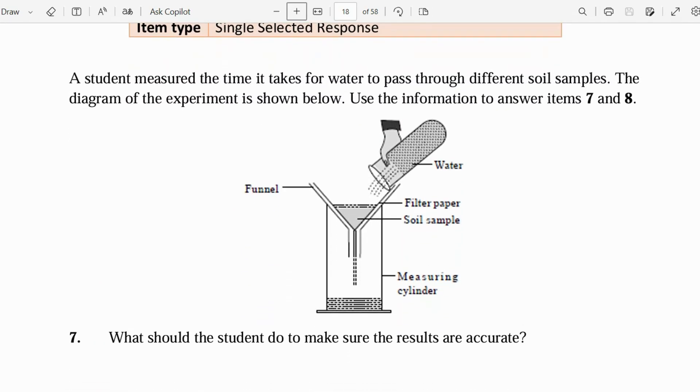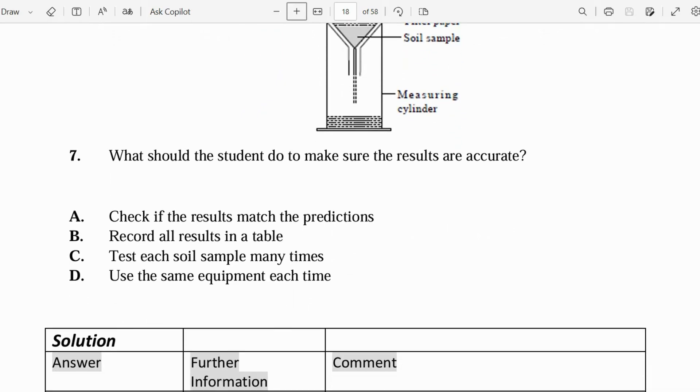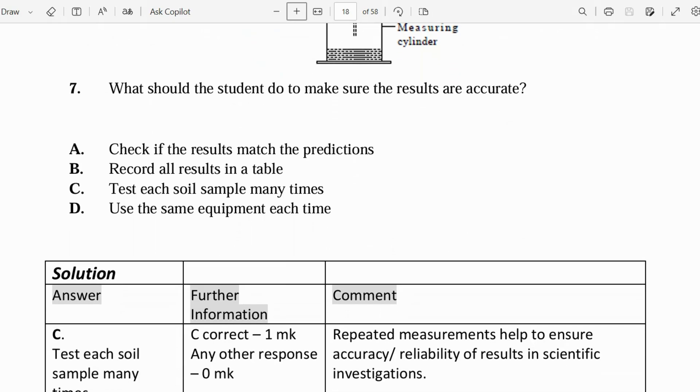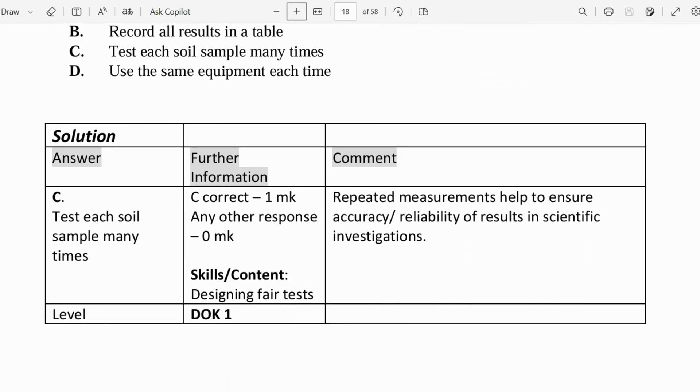Let's look at number seven. A student measures the time it takes for water to pass through different soil samples. The diagram of the experiment is shown below. Use the information to answer items seven and eight. What should students do to make sure the results are accurate? So to ensure accuracy in any results, it is often advised to check the results by measuring it multiple times, because what this does is that repeating the measurement helps to ensure accuracy and reliability of the results in a scientific investigation. So if you did it first and it gave you one result, if you did it back again and it gave you the same result, then that shows that the result that you got initially was more likely consistent and that is the correct result.